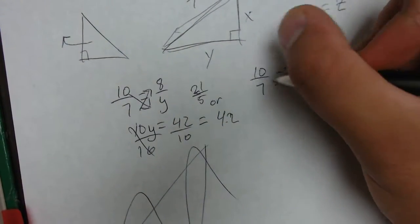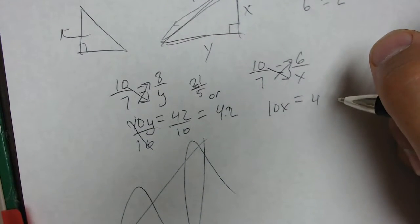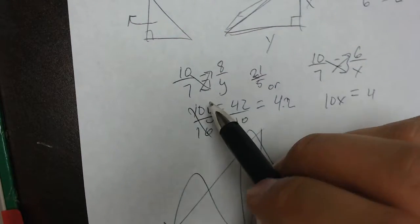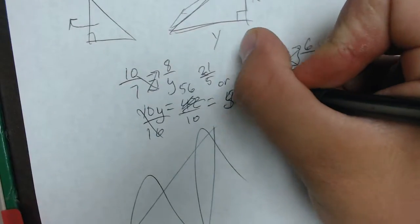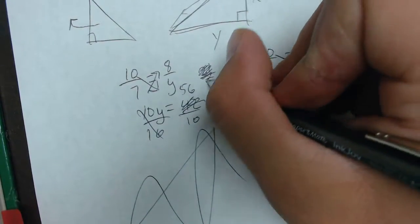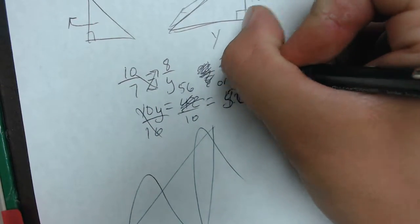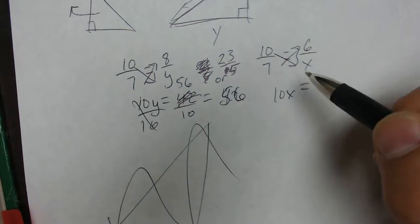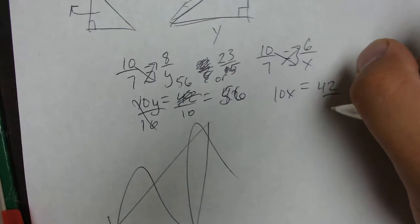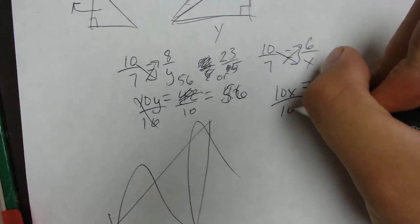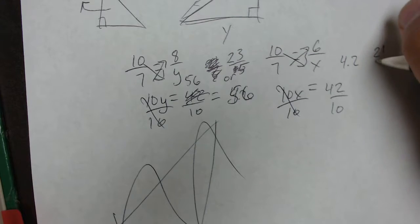The other ratio I can use is 10 is to 7 as 6 is to X. Cross-multiply, 10X is going to equal 40. Hold on one second, I messed up over here. 7 times 8 is not 42, it is 56. So this one should be 5.6 or 28 over 5. And this one, 7 times 6 is 42. I caught myself once I got that 42 there because I was like, that's not right. So we divide each side by 10 and X would equal 4.2 or 21 over 5.